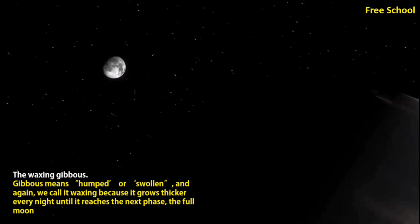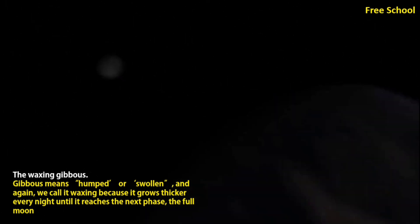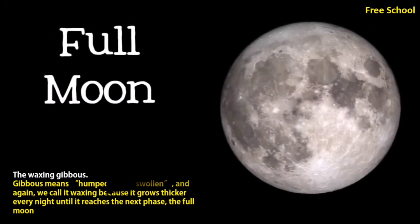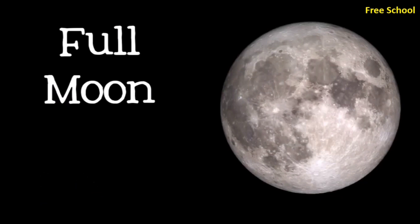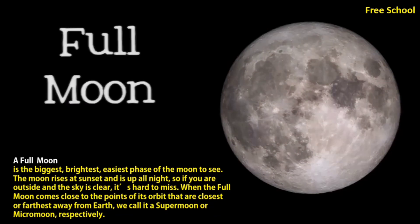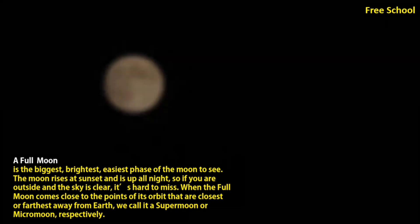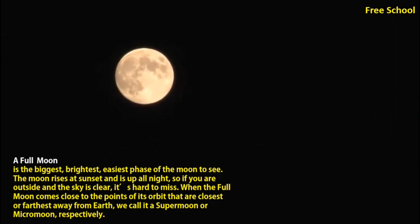The full moon is the biggest, brightest, and easiest phase of the moon to see. The moon rises at sunset and is up all night, so if you are outside and the sky is clear, it's hard to miss.